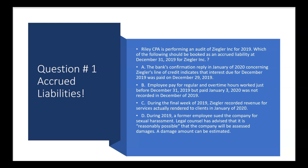Letter D: during 2019, a former employee sued the company for sexual harassment. Legal counsel has advised that it is reasonably possible that the company will be assessed damages, and a damage amount can be estimated. There is such a thing as contingent losses with lawsuits — but the loss would have to rise to the level of probable to be booked. Legal counsel is saying it's only reasonably possible, which doesn't rise to the level of probable. So that would be a nice footnote disclosure, but it will not be booked as an accrued liability. The answer is B.